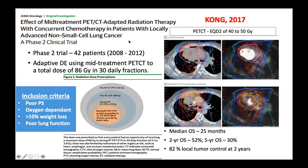Another PET-based planning study published in JAMA — only 42 patients, but notably from poor performance status patients with oxygen dependence and poor lung function. Dose was escalated based on response; the PET-based PTV ultimately received up to 86 Gy — very high. Results: median overall survival 25 months, two-year overall survival 52%, five-year 30%, and 82% local control. This is mind-boggling — tailored dose escalation to a restricted volume can yield remarkable results.